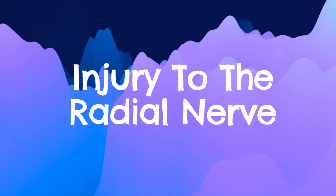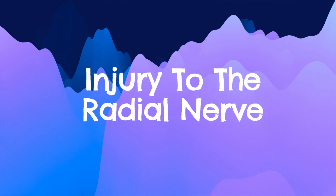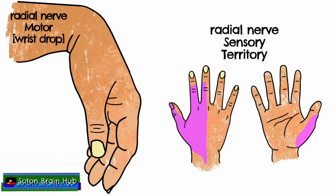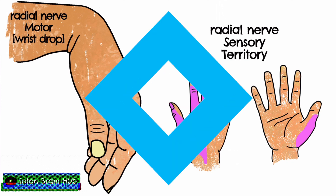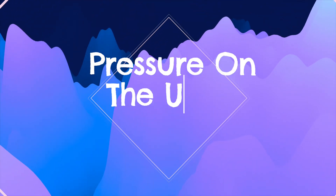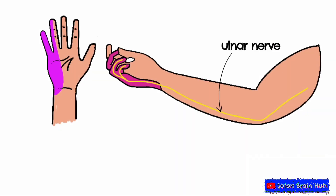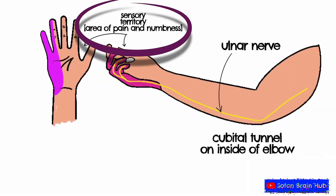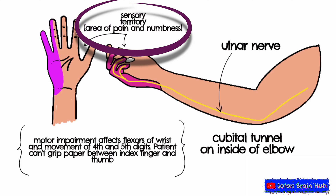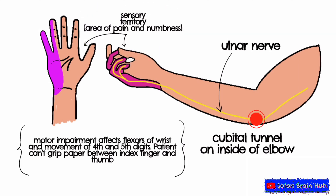Injury to the radial nerve can cause a characteristic wrist drop due to the radial nerve's innervation of the extensor muscles of the wrist. Pressure or stretching of the ulnar nerve can lead to cubital tunnel syndrome, which can cause numbness or tingling in the ring or little fingers and pain or weakness in the forearm or hand.